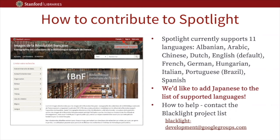Spotlight provides capabilities for creating a single exhibit in multiple different languages. Translations of common user interface elements are provided for a core set of languages, and additional translated material can be provided by the curator. Metadata for repository objects is displayed in the language in which it was catalogued. We do not currently have translations of common user interface elements for Japanese. Please consider helping with translations so we can add Japanese to the list of supported languages.